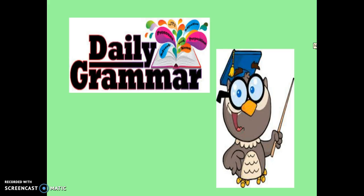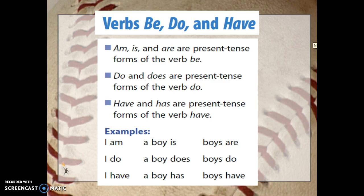All right, third graders, for our grammar today we are going to be working on verbs. We are not going to be doing action verbs, though. Now we're switching to be, do, and have. Am, is, and are are present tense forms of the verb be. Do and does are present tense forms.